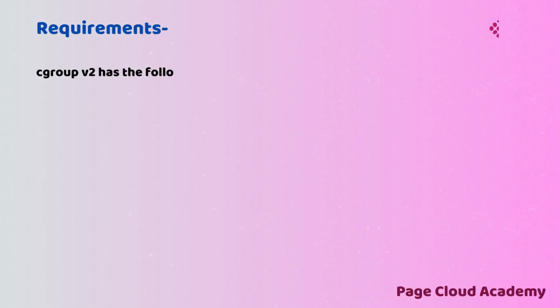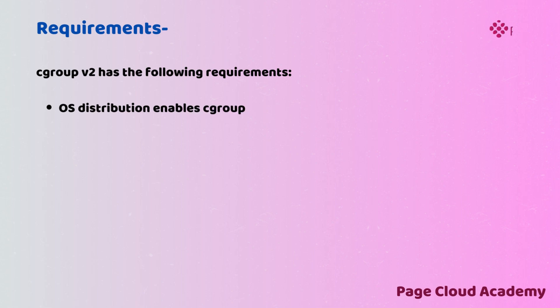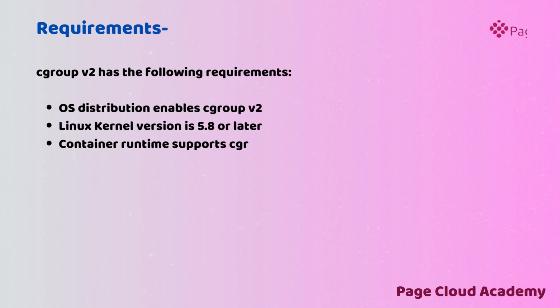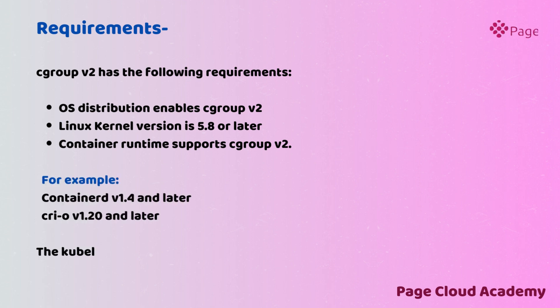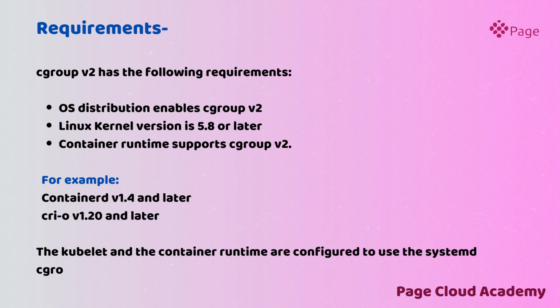CGroup V2 has the following requirements: the OS distribution enables CGroup V2; Linux kernel version is 5.8 or later; the container runtime supports CGroup V2 — for example, containerd version 1.4 and later, or CRI-O version 1.20 and later; and the kubelet and container runtime are configured to use the system's CGroup driver.